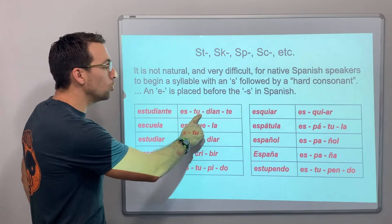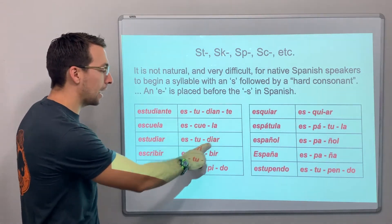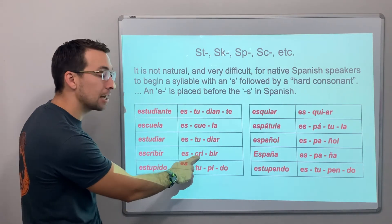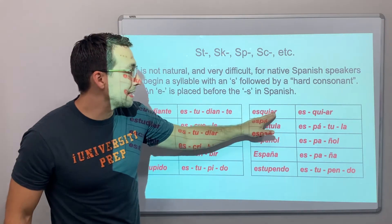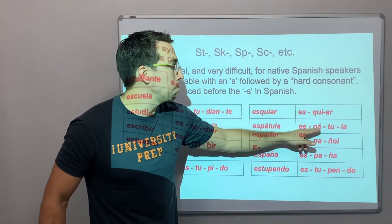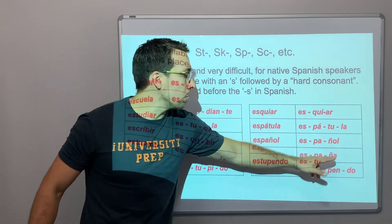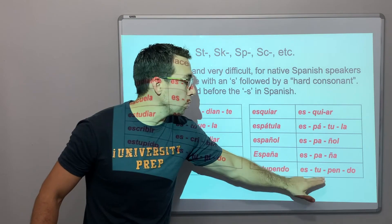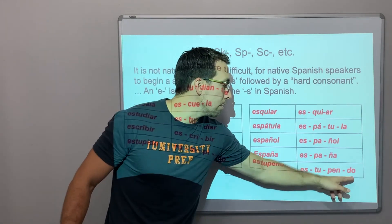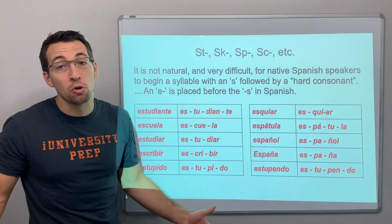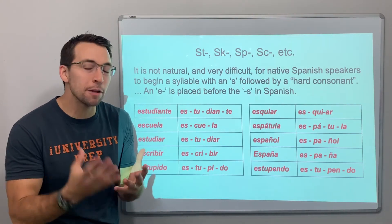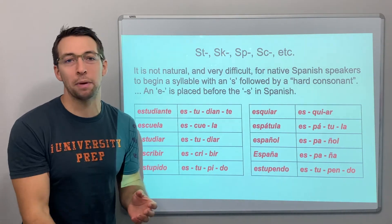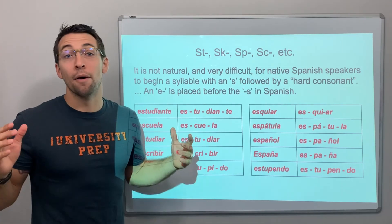Let's look at these words again — the consonant starts the syllable: estudiante, escuela, estudiar, escribir, estúpido, esquiar, espátula, español, España, estupendo. Consonants are the first letter — syllables start with a consonant. The sounds in Spanish start with a consonant, mostly.